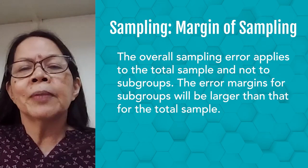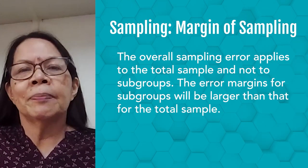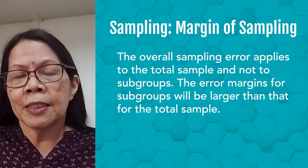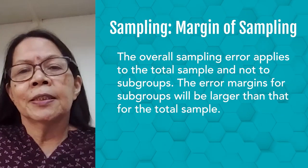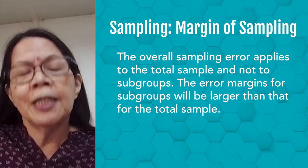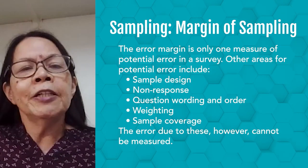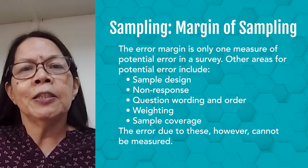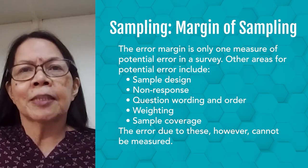The overall sampling error applies to the total sample and not to subgroups. The error margin for subgroups will be larger than that for the total sample. For example, if the total sample size is 1,200, the error margin for the total sample is plus or minus 3 percentage points, but for women or for men alone it is plus or minus 4 percentage points. The error margin is only one measure of potential error in a survey. Other sources of potential error include sample design, non-response, question wording and order, weighting, and sample coverage.